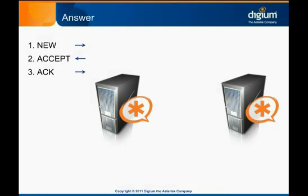The right-hand server next sends a RINGING message. This call control message tells the left-hand side that the called party is being alerted of the call. The called party isn't necessarily an EECS device. It could be a traditional analog phone connected to a Digium-Dotty interface card, or it could be a SIP phone, or any number of other types of endpoints. It's not important for the left-hand side to know what the endpoint is, but it is important for it to know that the called party is being alerted.